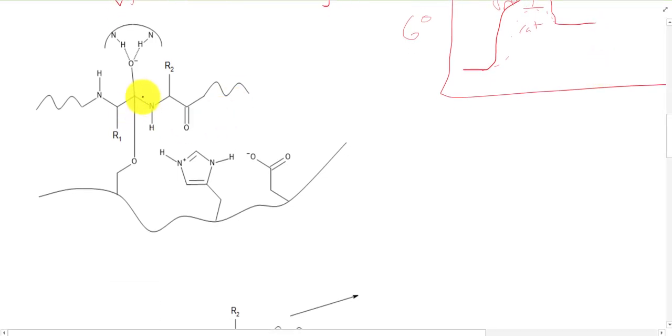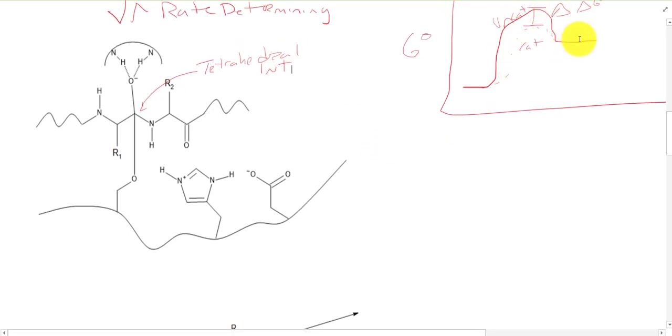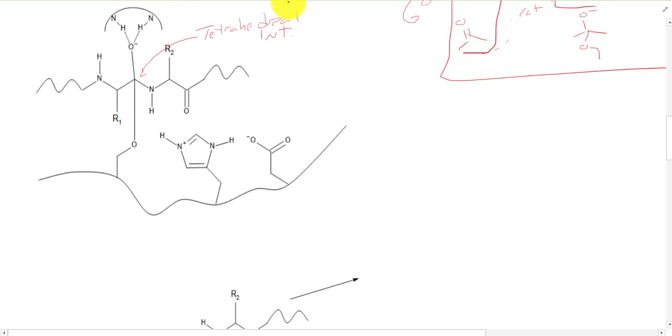So there we go. We have a nice tetrahedral intermediate that we've kind of invested a little bit in. This thing now wants to come back downhill, you can imagine, because we've invested quite a bit of energy. Getting it from a double bond, a carbonyl, to a single bond O. Really kind of like an enolate or a hemiacetal. So obviously that's a bit of an uphill slog. And so this thing is going to want to reform a carbonyl at some point. And luckily for us, we have all the pieces we need to do that.